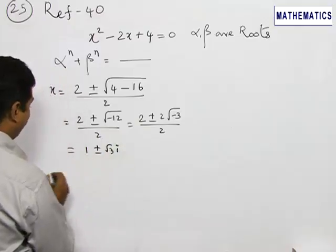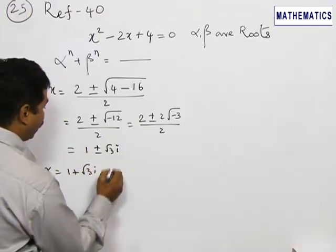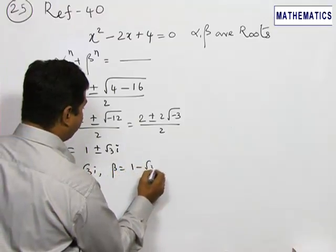So we can take α as 1 + √3i and for β it will be 1 - √3i.